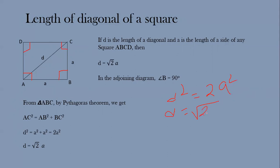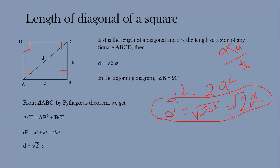So AC² = a² + a² = 2a². Taking the square root: d = √(2a²). Since √(a × a) = a, this simplifies to d = √2 · a. That is the reason the diagonal of a square is √2 times the side. A square also has two diagonals — joining all pairs of opposite vertices in this four-vertex quadrilateral — and the length of each diagonal is √2 · a.